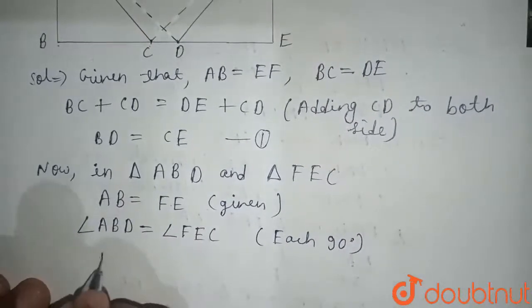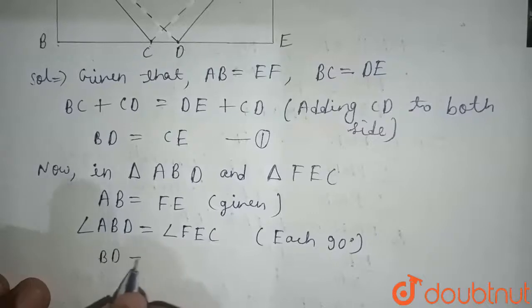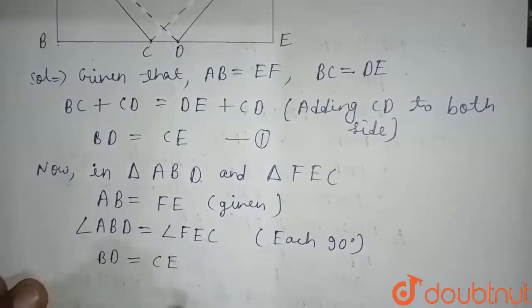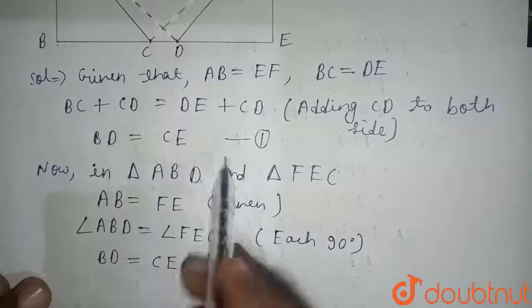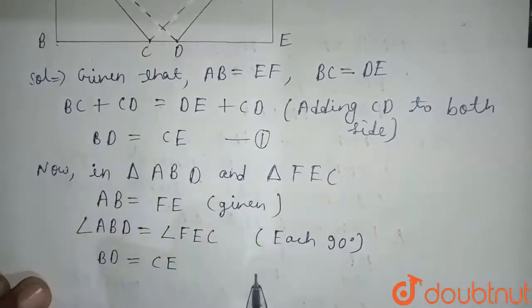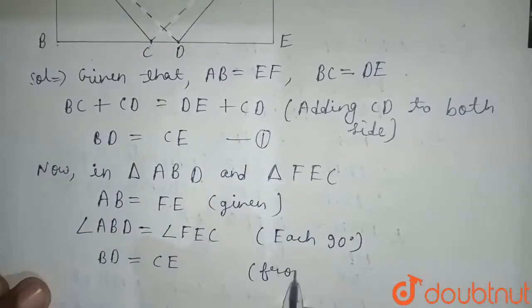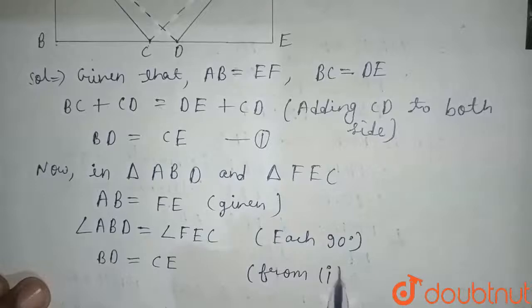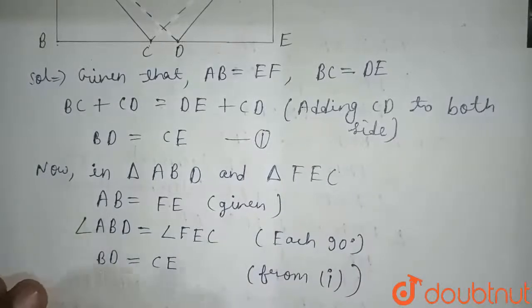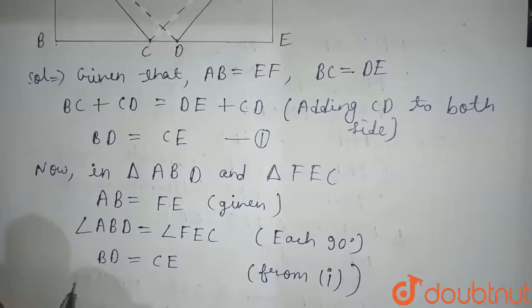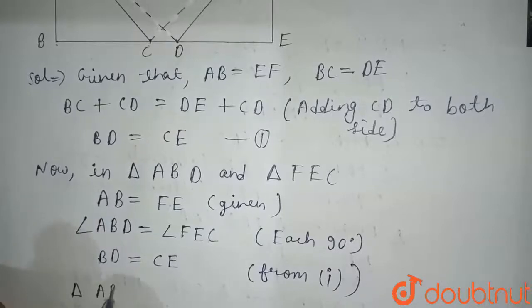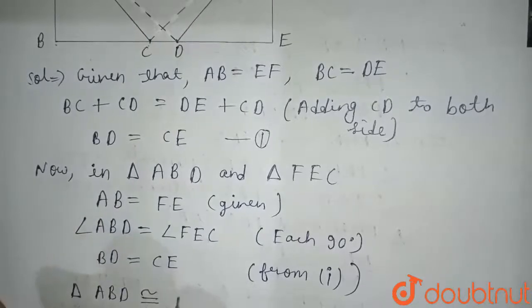So we can write here: AB equals FE, given. Angle ABD equals angle FEC, each 90 degrees. And BD equals CE from equation first.